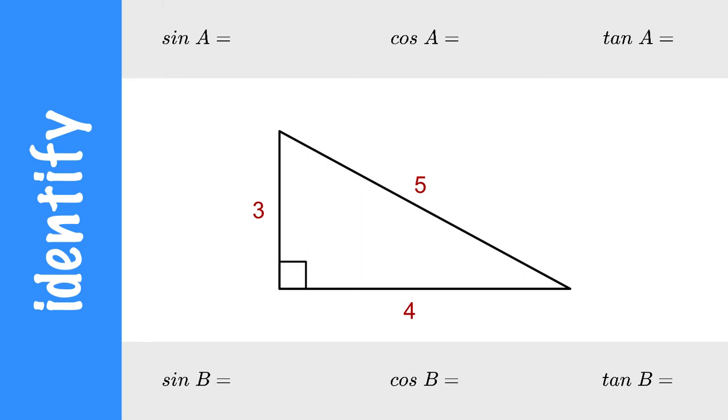Okay, I've got a right triangle labeled 3, 4, 5 for its side lengths. Label the vertices again: A, B, and C.